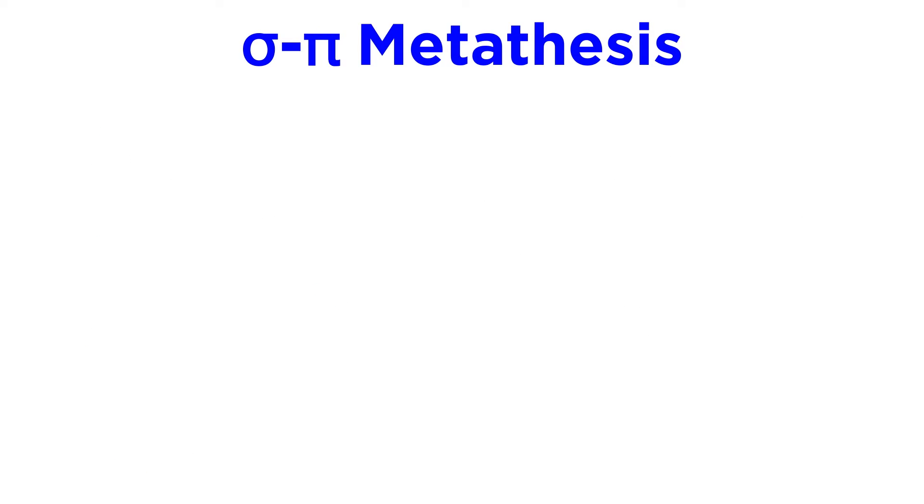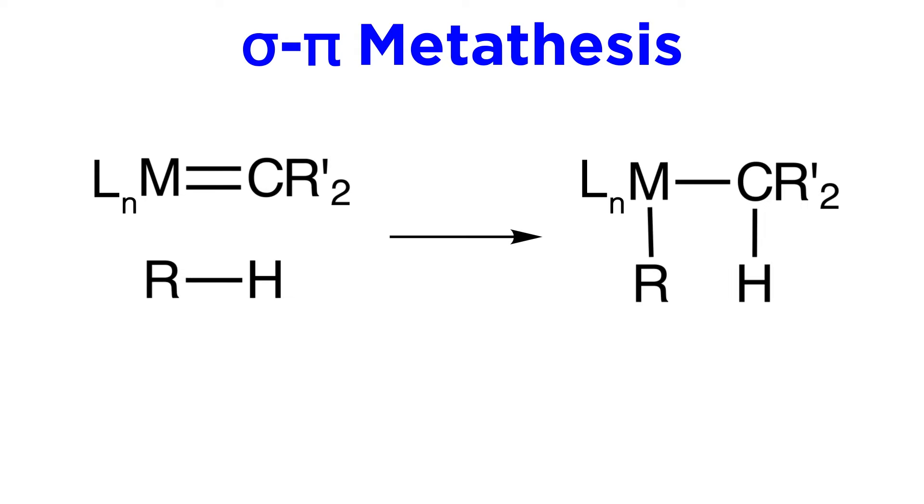Now let's check out sigma-pi metathesis. Looking at the generalized version first, we see a single bond and double bond oriented in this fashion. We have an alkane, which gives us the single bond, which is the sigma bond, and we have a metal with an alkylidine ligand which gives us the double bond, and therefore the pi bond that will be involved in the metathesis. So here the sigma bond and the pi bond will break, and we will get two new sigma bonds, one between the metal and the alkane, and the other between the hydrogen and the carbon from the ligand.